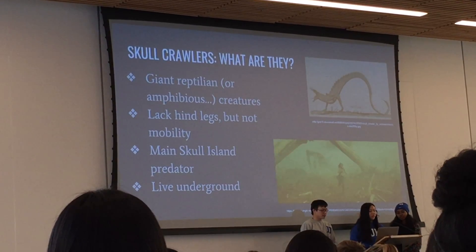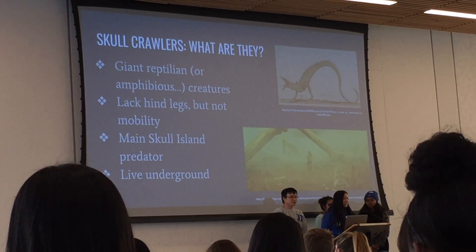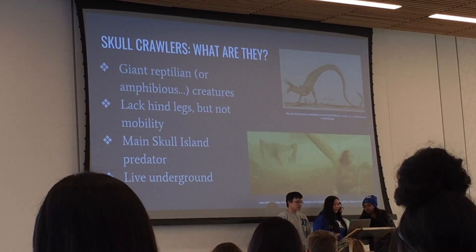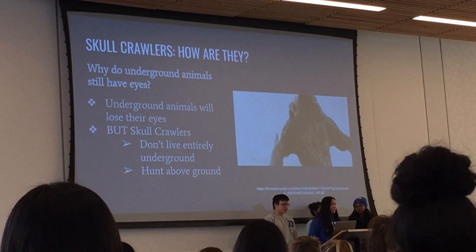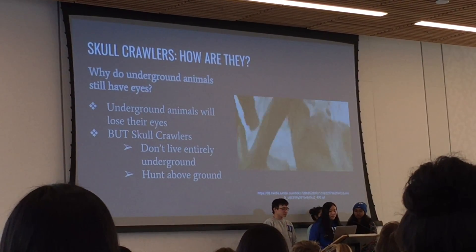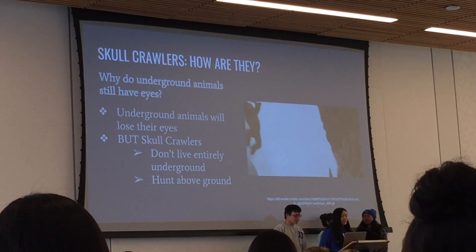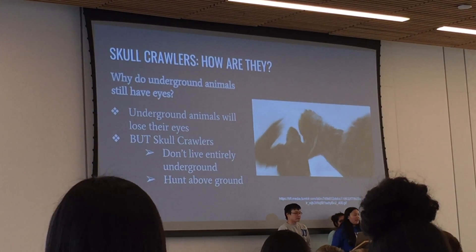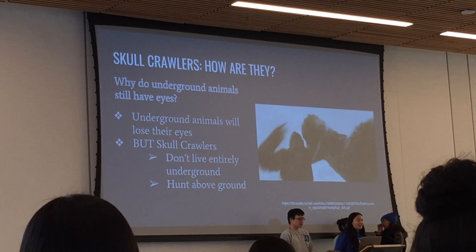The main antagonist creatures in the movie are the skull crawlers — giant reptile or amphibian-like monsters with no hind legs, just a tail, living primarily underground but resurfacing periodically. We had two questions about them. First: why do they still have eyes if they live underground? Many underground creatures today have lost their eyes since they aren't beneficial underground. But we came up with explanations: in the movie they resurface when disturbed, and they may not be able to get enough prey underground, forcing them to surface to hunt — in which case having eyes would be favorable.